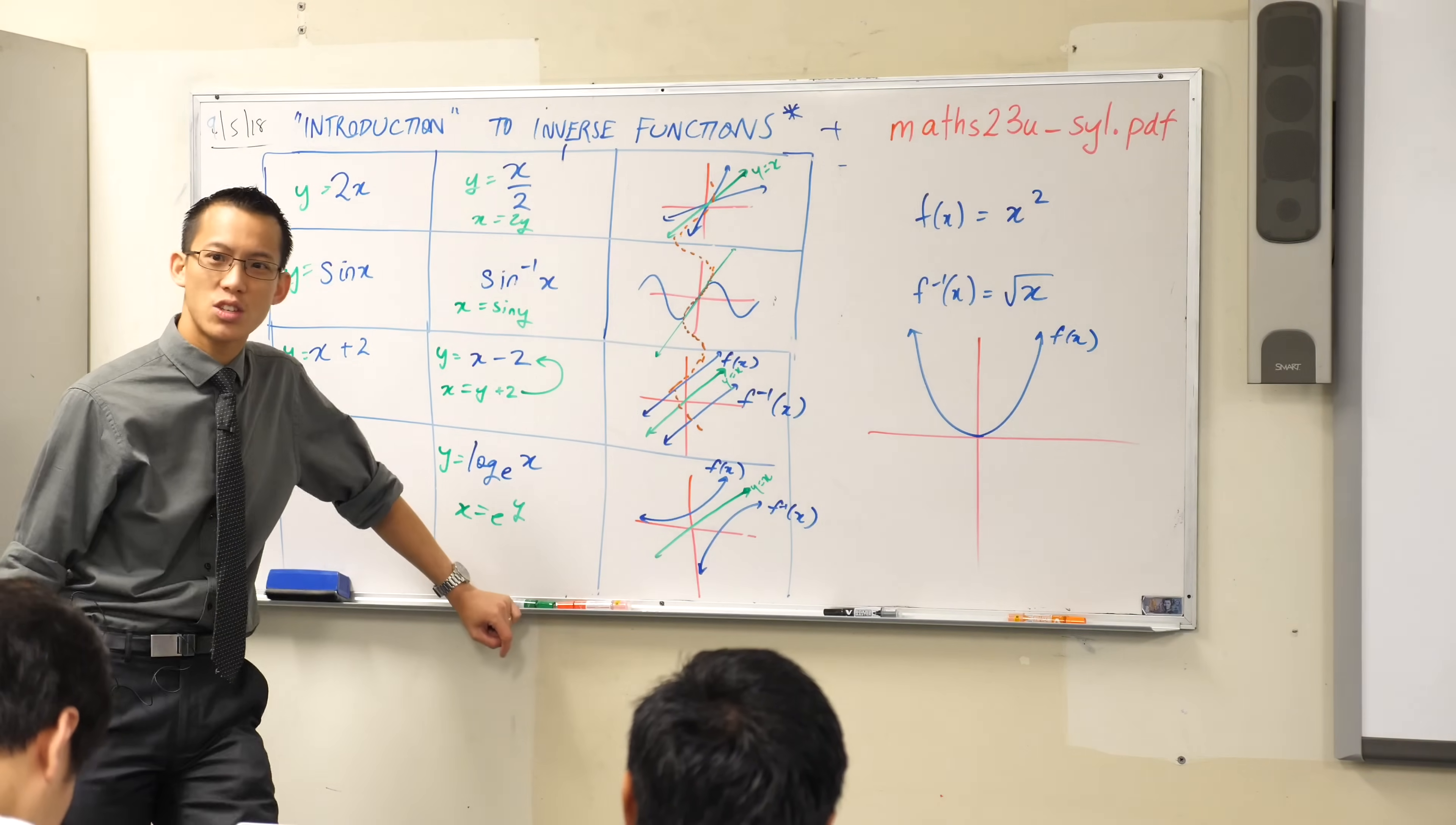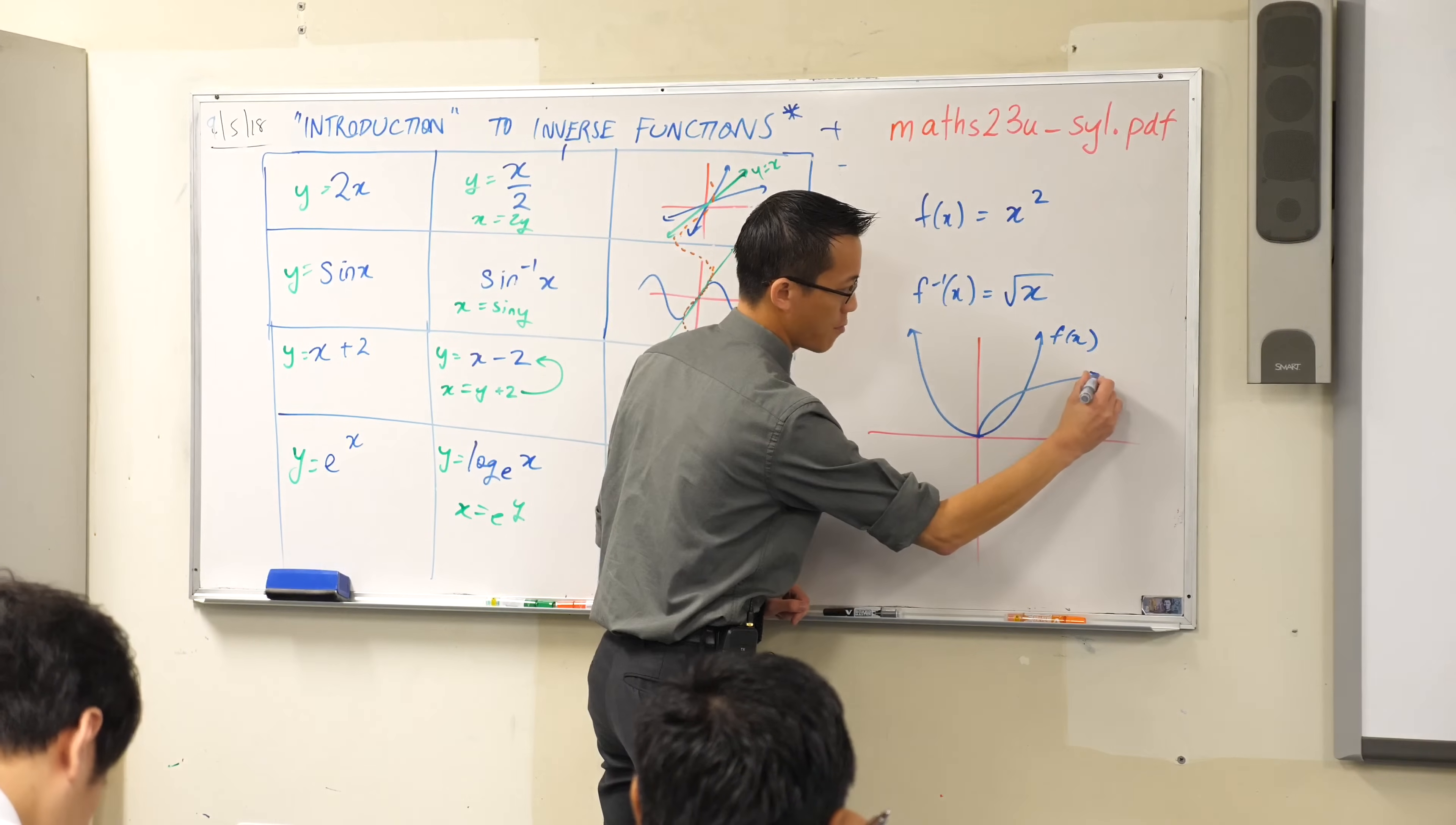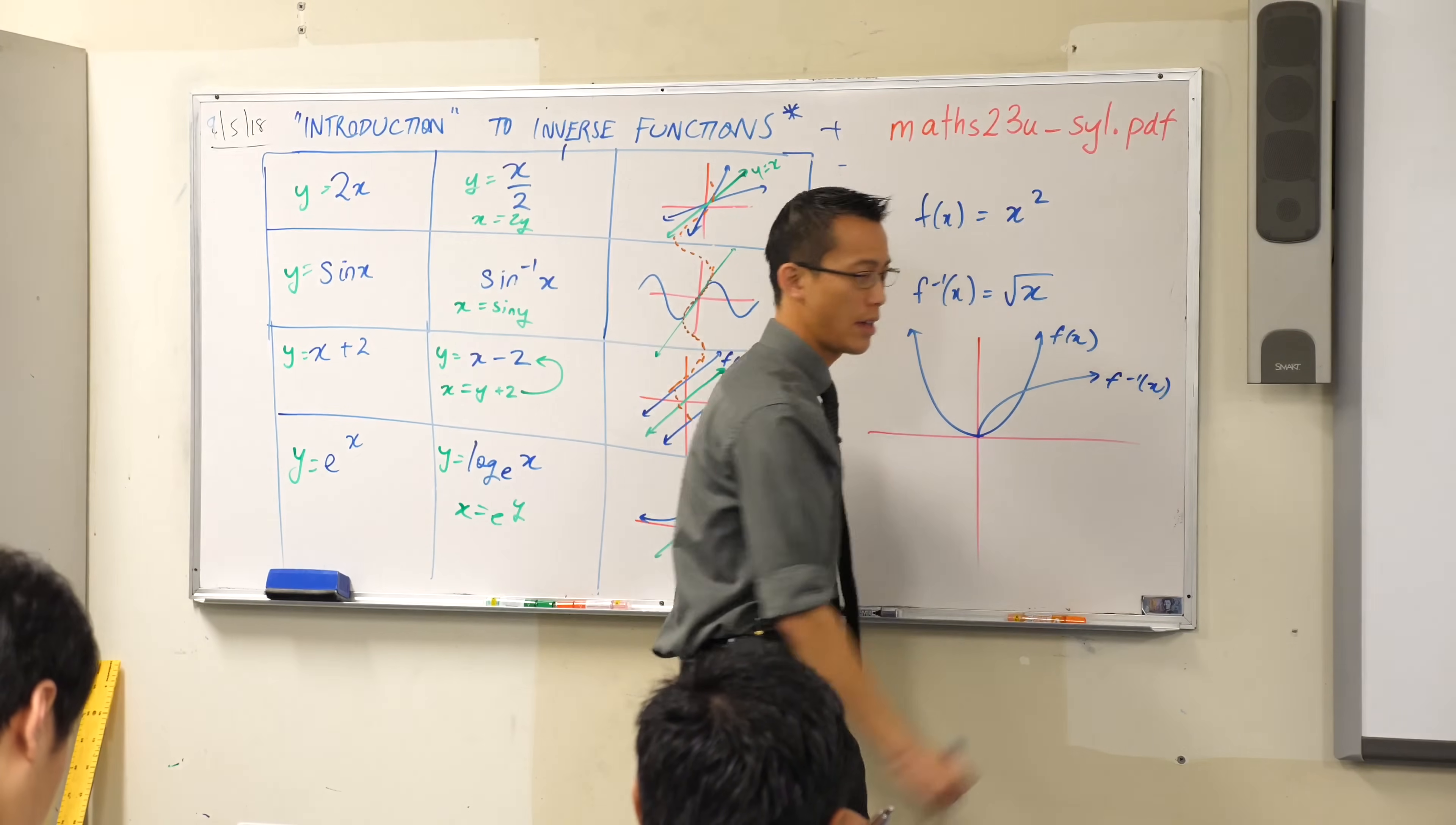Now what does the square root of x look like? Well it begins at the origin right here and then here's the shape. There it is. That's the square root of x. I should label it, shouldn't I? F inverse.